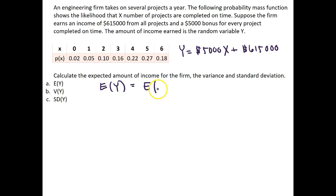So the expectation of Y is simply just equal to the expectation of 5,000 times X plus 615,000. So this is just a linear combination of X, so we can use the rules for linear combinations for expectations.